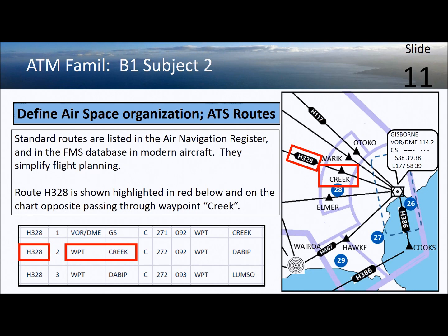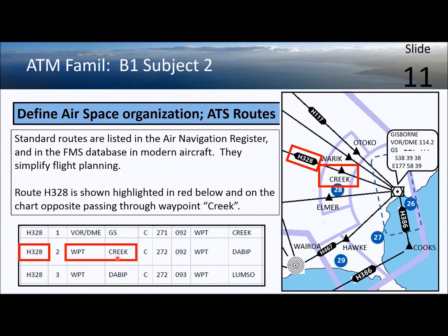ATS routes are standard routes designed to help facilitate a smooth and efficient flow of air traffic. On this diagram based on an aeronautical chart, we can see a number of standard routes: H117, H467, and H328 highlighted here. If we go to the air navigation register in the online AIS or AIP, we find H328 and its various segments listed. For example, leg two is from waypoint Creek to another waypoint, and all that information ties up with the route marked on the map.